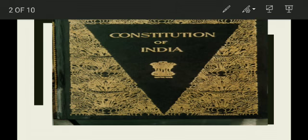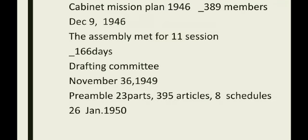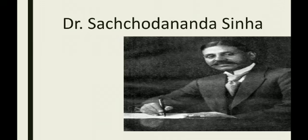Today we are going to discuss about the Indian Constitution. The Constitution of India was framed by a Constituent Assembly set up under the Cabinet Mission Plan 1946. The assembly consisted of 389 members. The assembly held its first meeting on December 9, 1946. Dr. Satchidananda Sinha, the oldest member, was elected as the temporary president of the assembly.